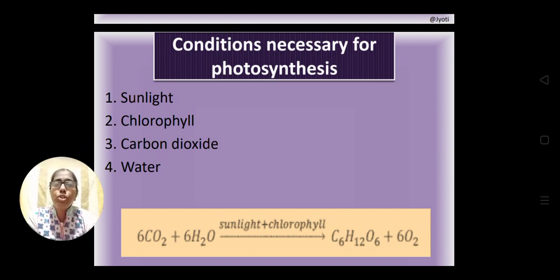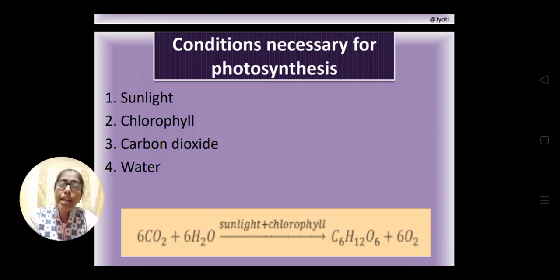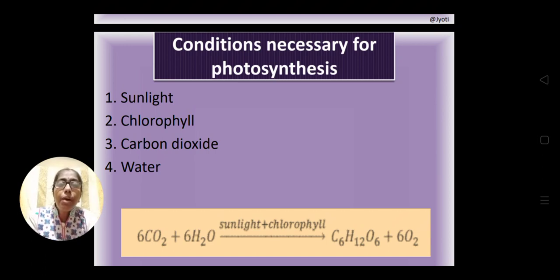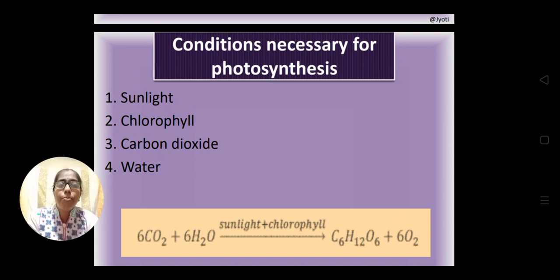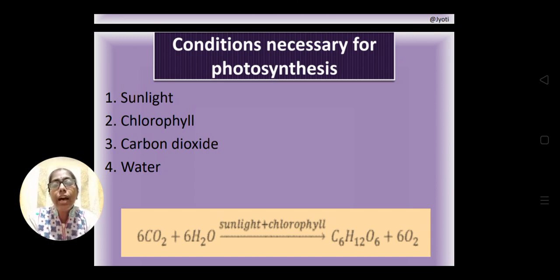Water is received by the plants from the soil through the roots. Here is the general equation for photosynthesis: carbon dioxide (CO₂) plus water (H₂O), in the presence of sunlight and chlorophyll pigments, is converted into carbohydrate or glucose (C₆H₁₂O₆) — glucose being the simplest form of carbohydrate — and oxygen is released. The raw materials are carbon dioxide, water, and sunlight.